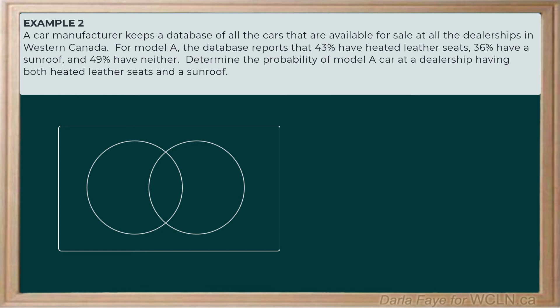Let's draw our Venn diagram. We've got two events: the first is that a car has heated leather seats, and the second is selecting a car that has a sunroof. We'll use H to represent the favorable outcomes for the event that a car has heated leather seats, and S to represent the favorable outcomes for the event that the car has a sunroof.